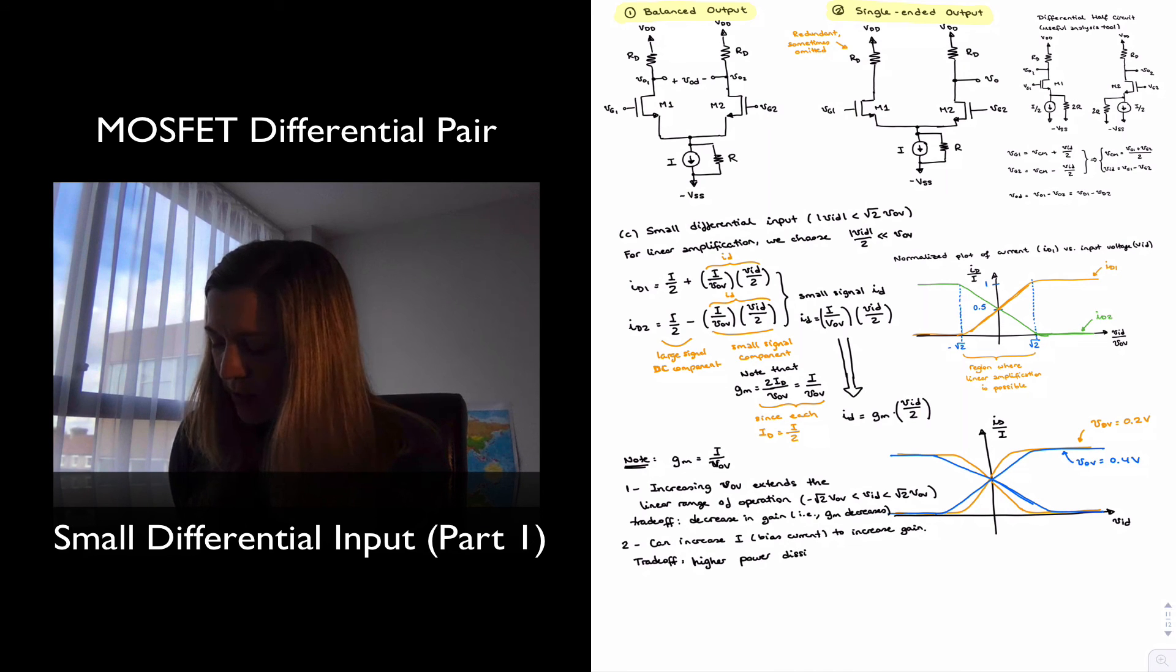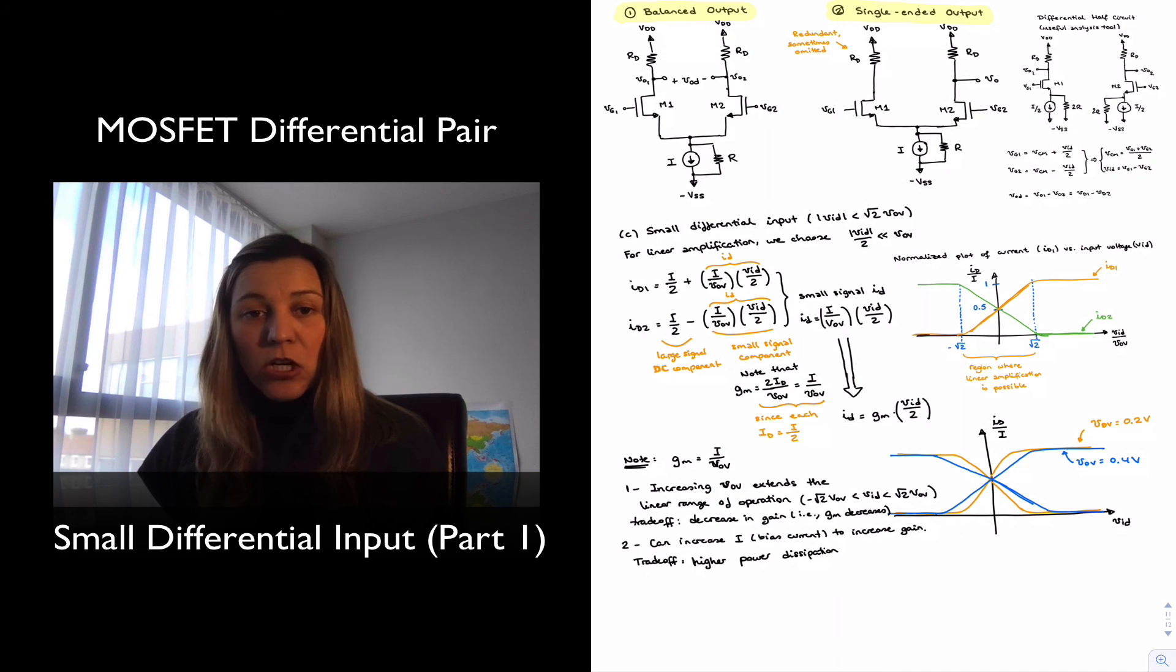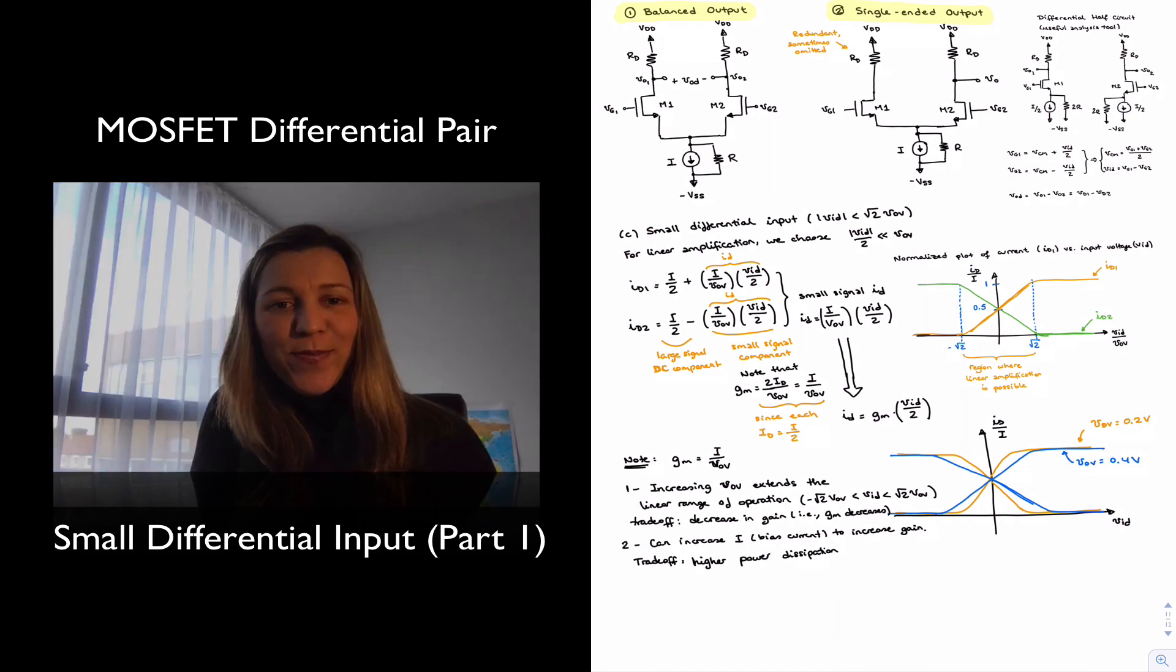Those are some of the design constraints that one has to play with and consider. All right. And next, now that I have come up with an expression for the small signal current in terms of GM, what I'm going to do is derive, basically perform the small signal analysis on the circuit and try to derive an expression for the small signal voltage gain. That will be in the next video. Thank you.